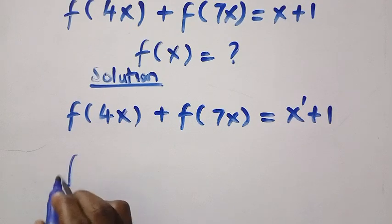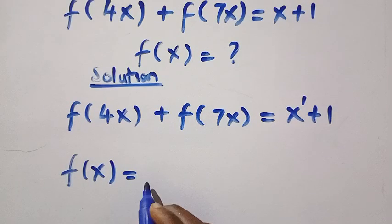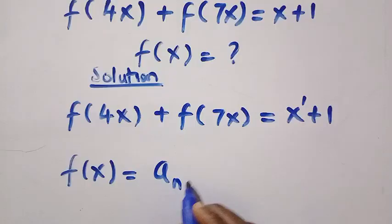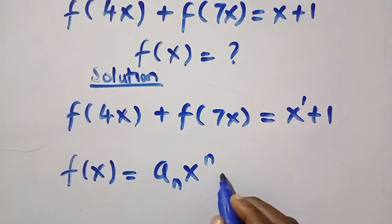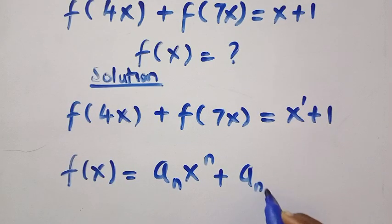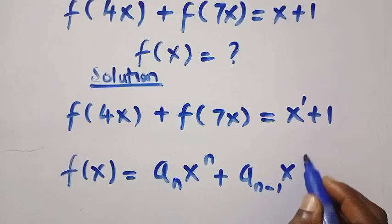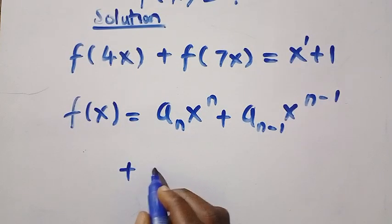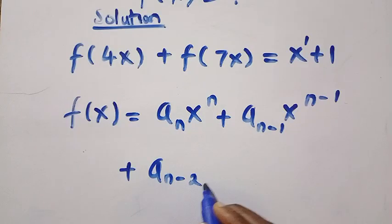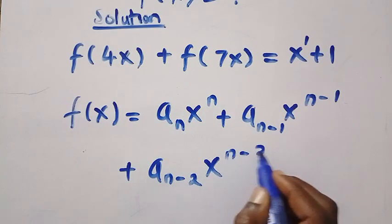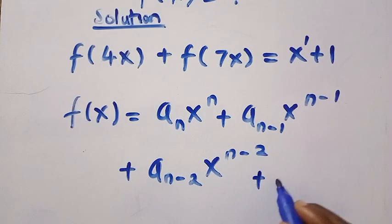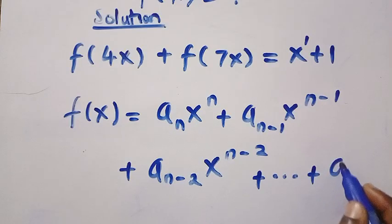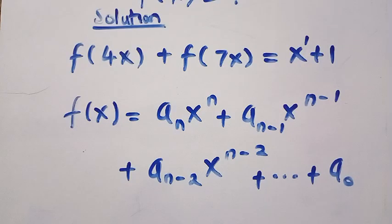Where we have, suppose we have f of x equals a_n, then x raised to the power of n plus a_(n-1), x raised to the power of n minus 1. So the next one that comes will be plus a_(n-2), x raised to the power of n minus 2. And this is how it keeps going till we reach a_0, depending on the power of n that we have.